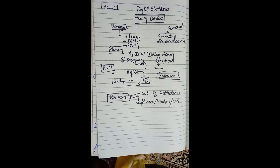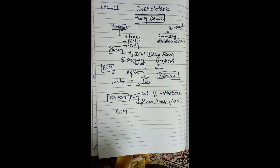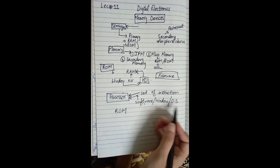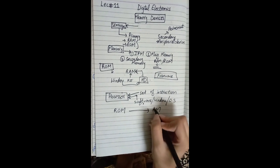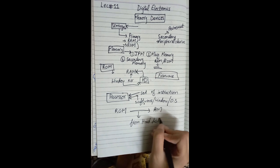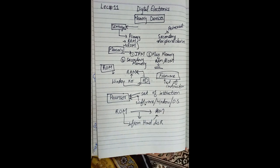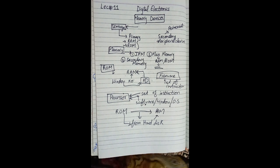Now what is ROM doing? ROM is loading the operating system software by using firmware into RAM from the hard disk. I will repeat this so that it is clear: ROM is loading the operating system by using firmware in RAM from the hard disk. This is what we call bootstrapping — ROM is loading the set of instructions, the software. This is bootstrapping.